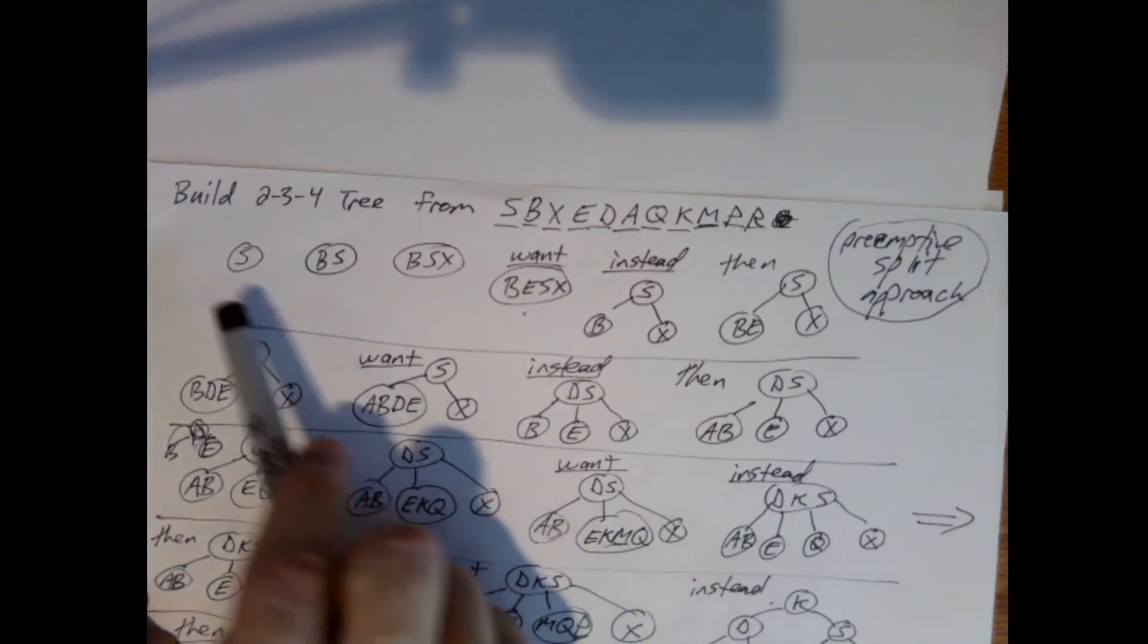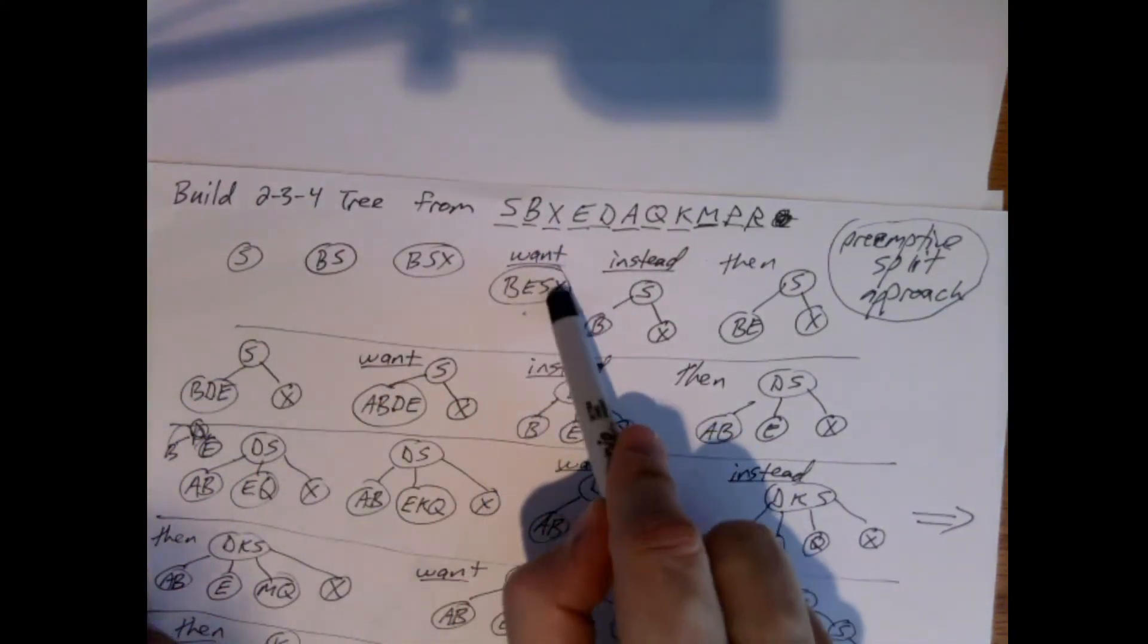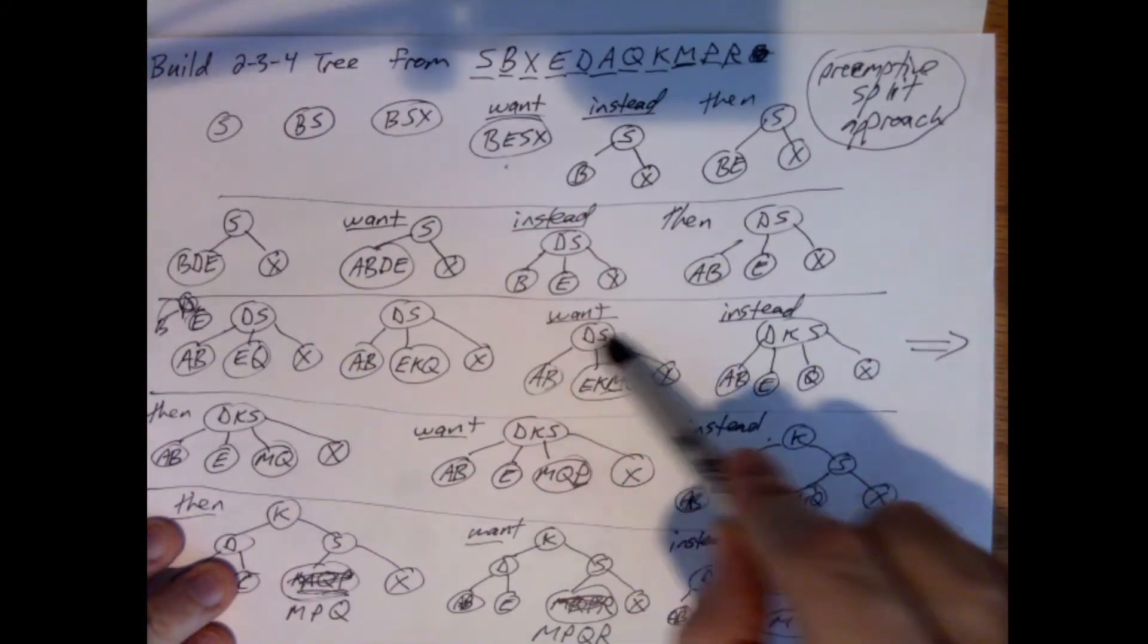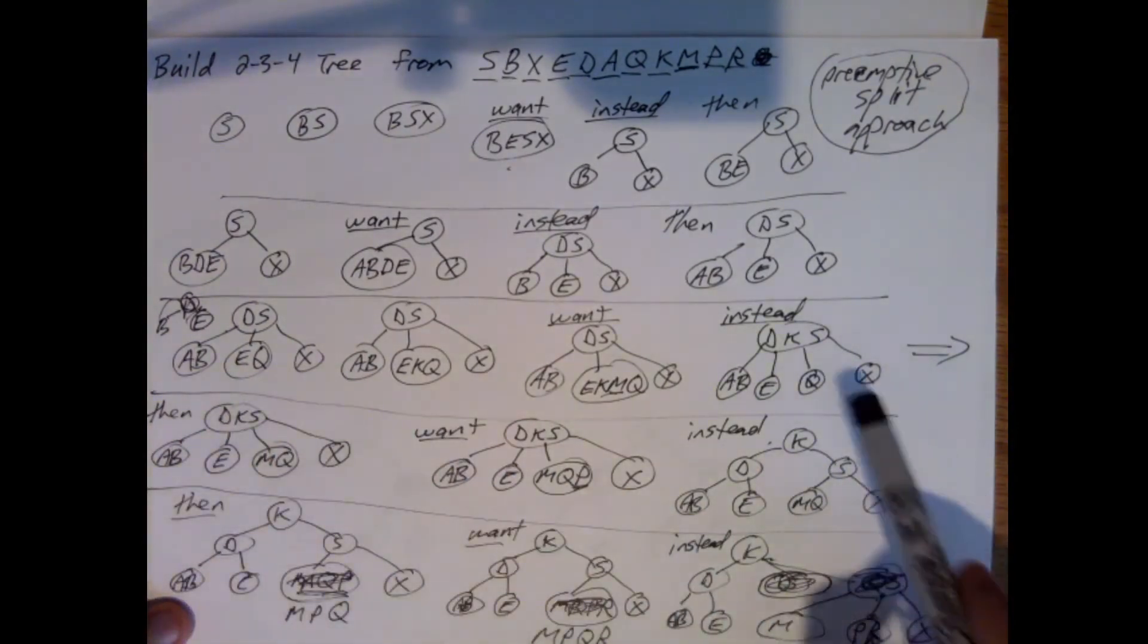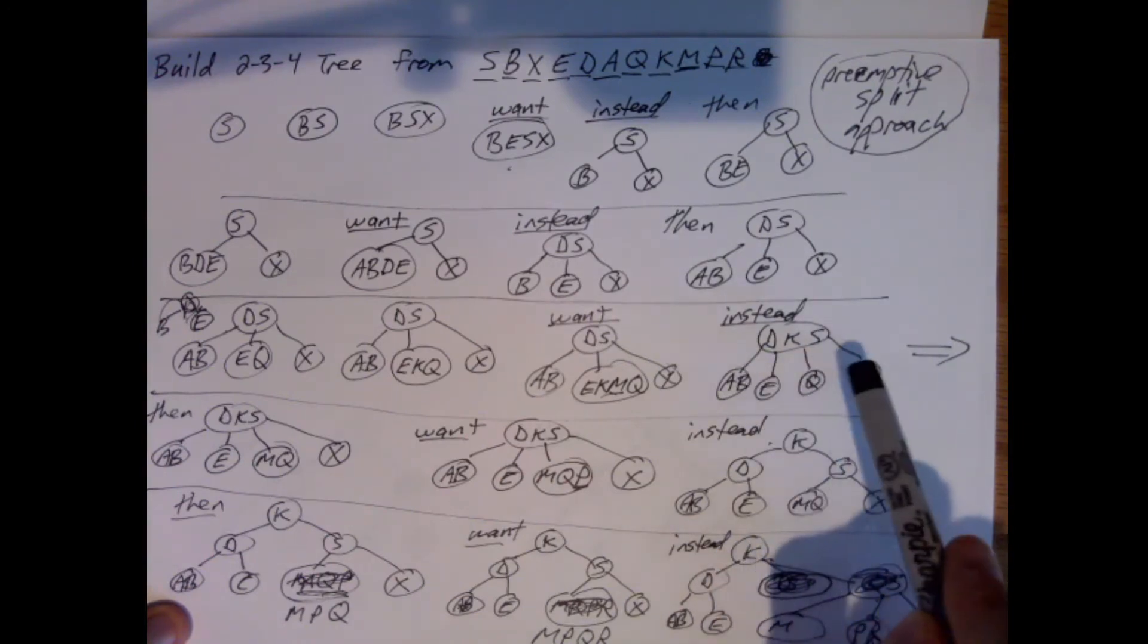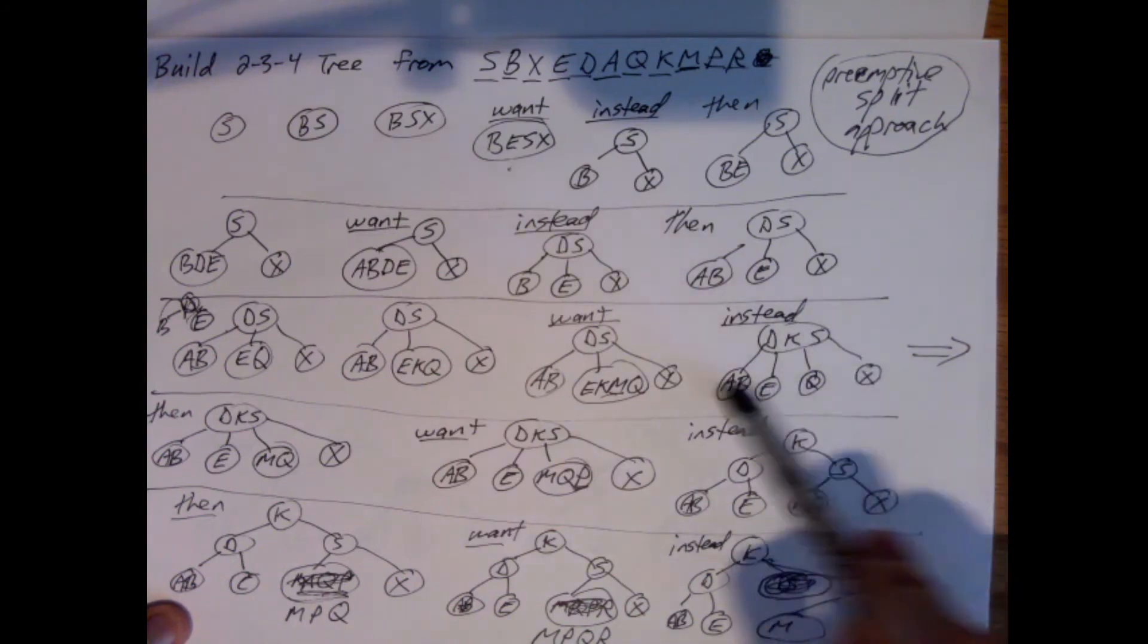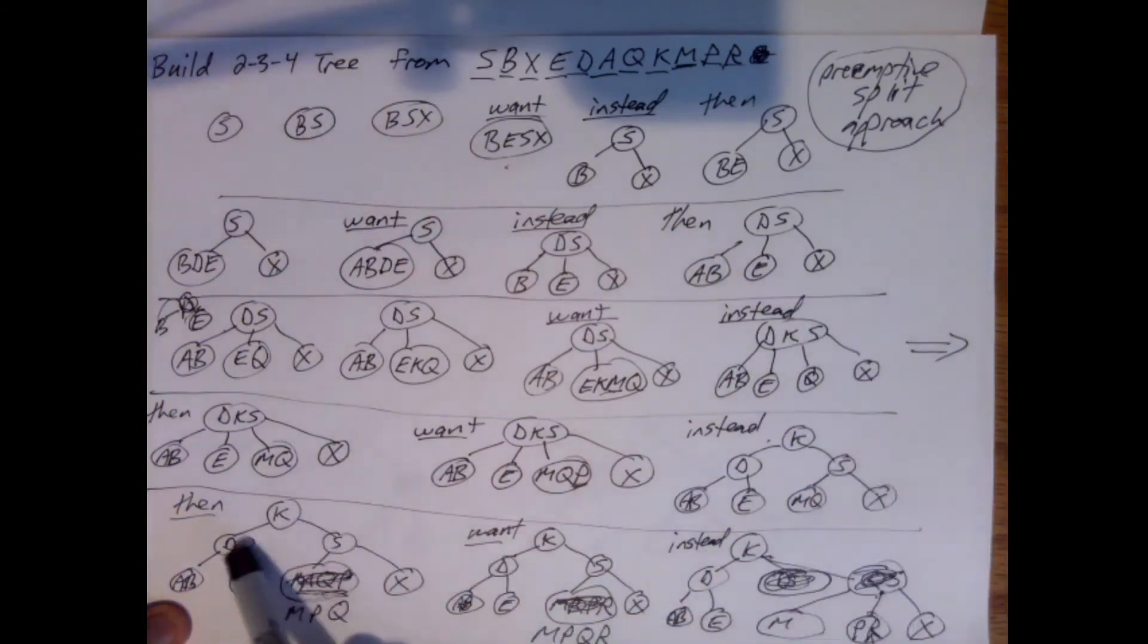So what do we need to keep in mind as we're doing this? Anytime I'm going to have too many keys, I do a split. And because we're using the preemptive split approach, if I'm working down a tree and we get to where I have four child nodes, even though they can hold the extra key, I need to fix this as well. So we do that by splitting.